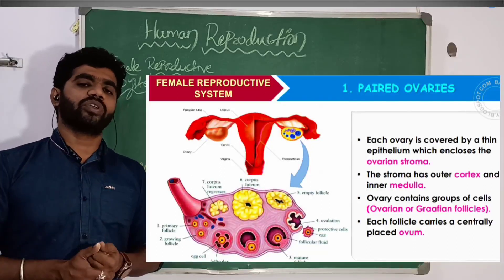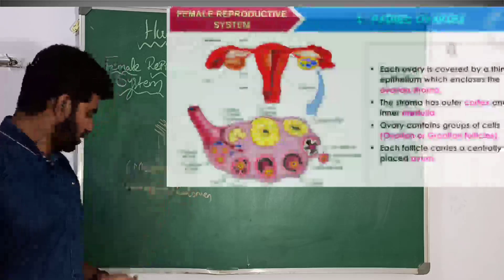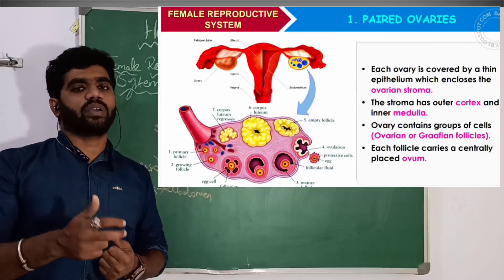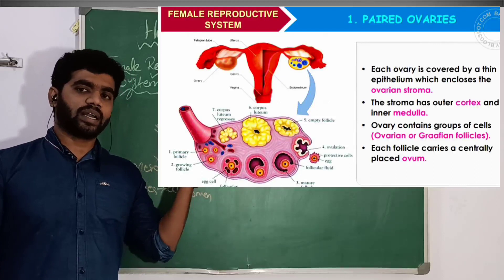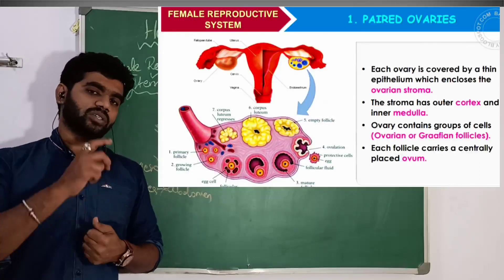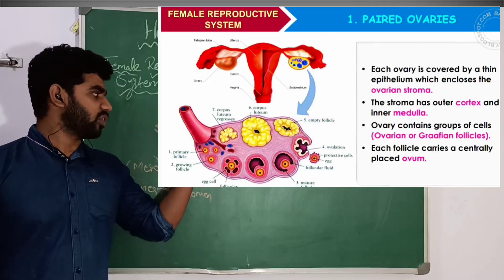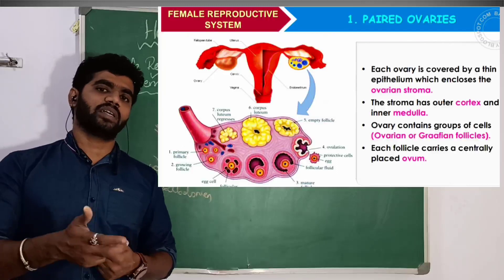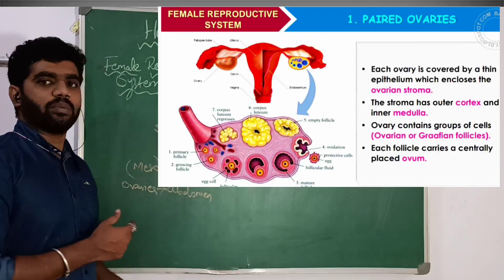You can watch a separate video for the detailed structure of the ovary. The ovary has an outer epithelium, the ovarian stroma, the outer cortex, and the inner medulla. Along with the eggs, the ovary produces ovarian steroid hormones — estrogen and progesterone. Within the ovary there are follicles, and one follicle contains one egg. That is about your ovaries, the primary sex organs.